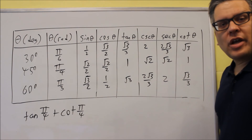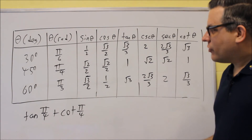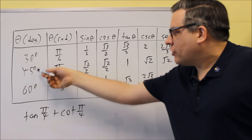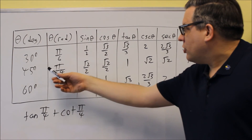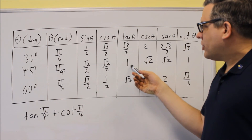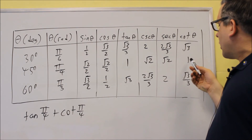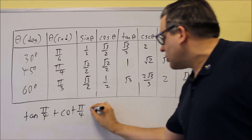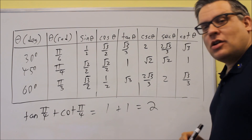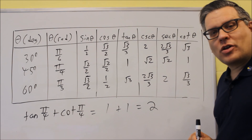Now we have tan(π/4) + cot(π/4). Pi over 4 is the radian measure for 45 degrees, and you can get both values from the table. Tangent of π/4 is 1, and cotangent of π/4 is also 1. So 1 plus 1 gives you 2. That's all you have to do on this one.